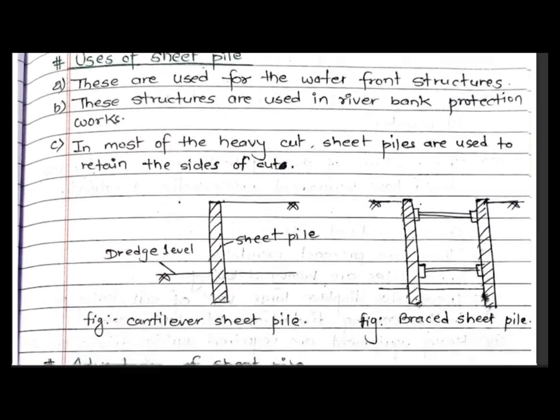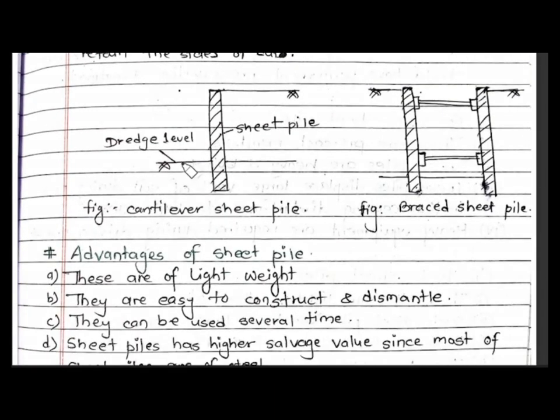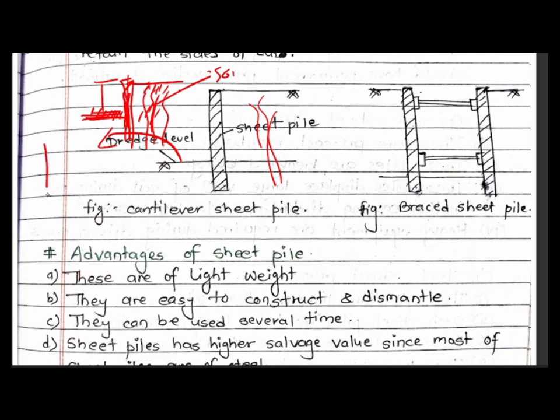This diagram shows the dredge level with cantilever sheet pile and braced sheet pile configurations. We have level ground conditions to consider.